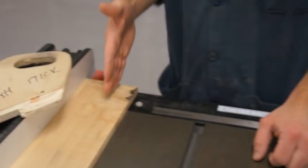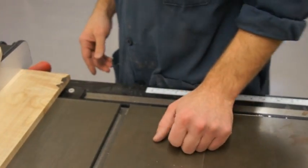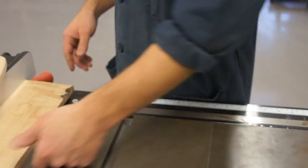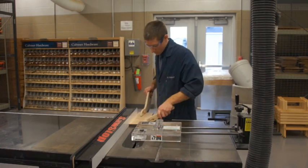Turn on the saw and stand to the left of the blade with your hip against the table. Now you are ready to make the cut.